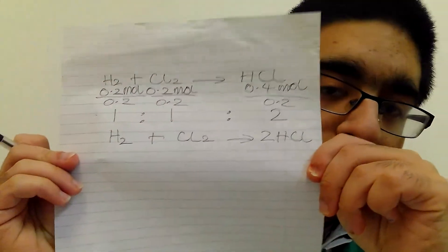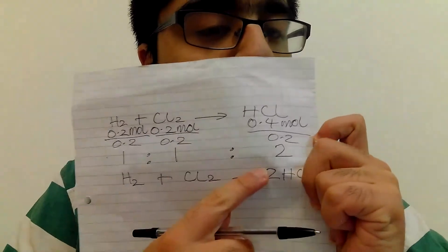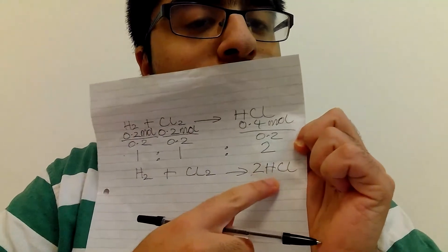Now I basically have my equation — the molar ratios, also called stoichiometric ratios. A ratio of 1 means you just write H2 without a coefficient of 1 in front. Similarly, 1 Cl2 is just written as Cl2. And because there are 2 HCl, we write 2 HCl. So the balanced symbol equation is H2 plus Cl2 gives 2 HCl. You can check: 2 hydrogens on the left, 2 on the right; 2 chlorines on the left, 2 on the right. It all balances.